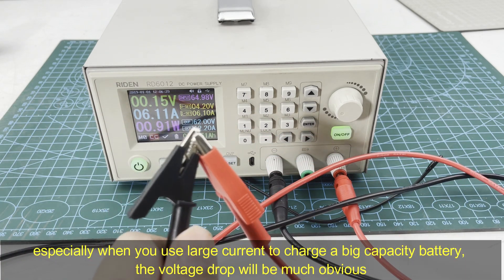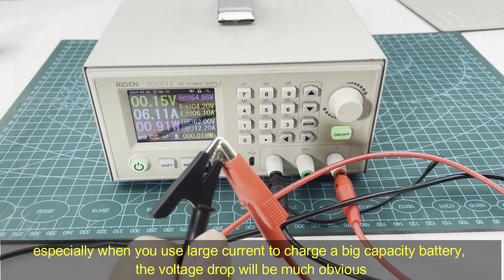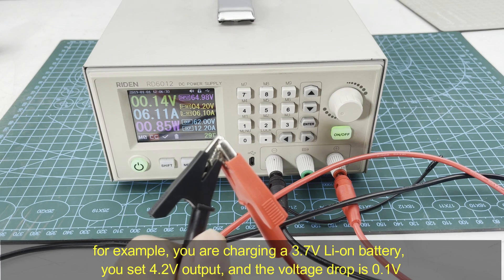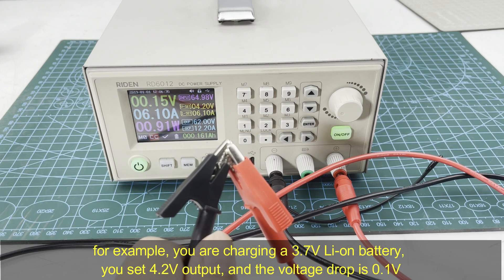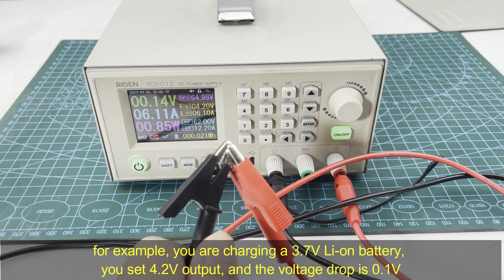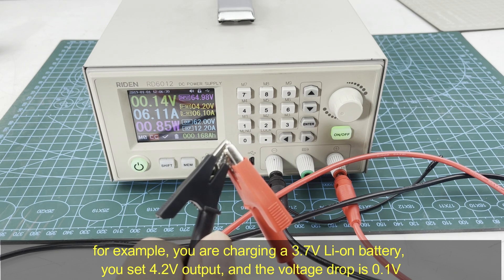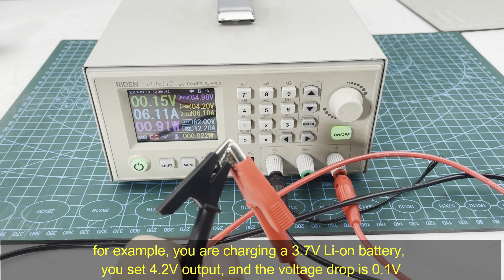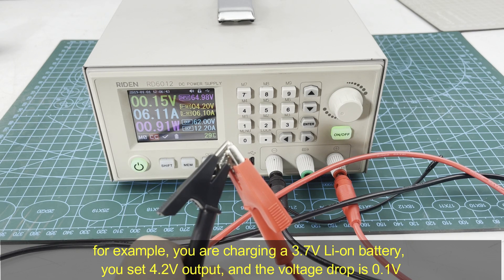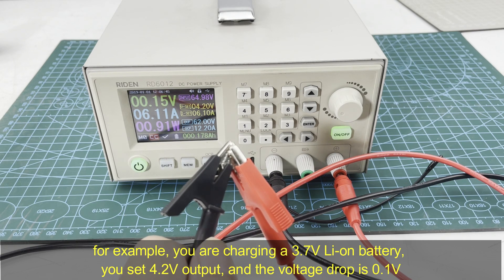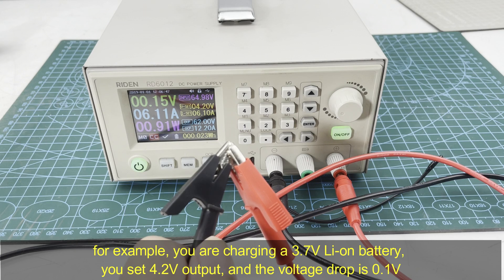So the voltage drop that happens on the cable will be large. For example, you are charging a 3.7 volt lithium battery. You set 4.2 volts to charge, and the voltage drop on the cable is 0.1 volt.